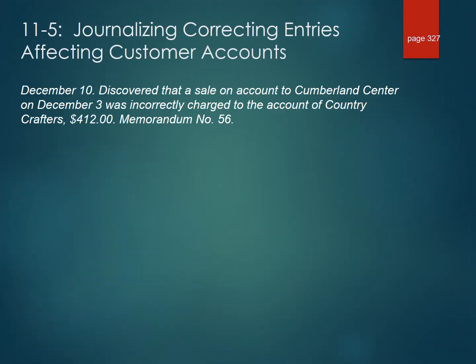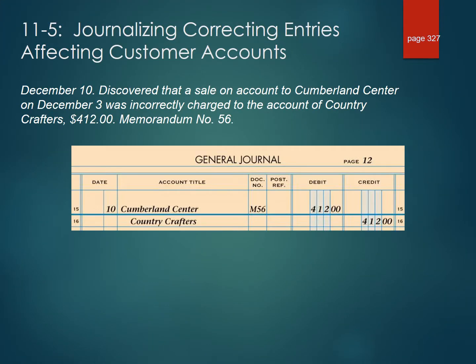11-5 Journalizing Correcting Entries Affecting Customer Accounts. We discovered on December 10th that a sale on account to Cumberland Center on December 3rd was incorrectly charged to the account of Country Crafters, $410, memo 56.